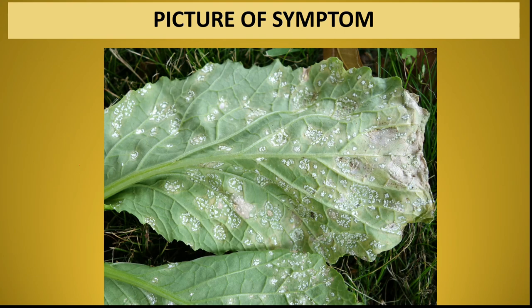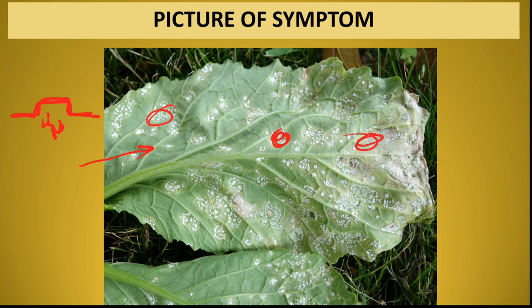Local symptom में white या creamy yellow color के pustules बनते हैं — pustules मतलब यह हल्के से उभरे हुए होते हैं, क्योंकि यहाँ पर pathogen multiply होता है और बहुत सारे spores बनाता है, जिसके कारण यह portion उभरा हुआ होता है। यह leaf के नीचे की side में ज्यादा बनते हैं।